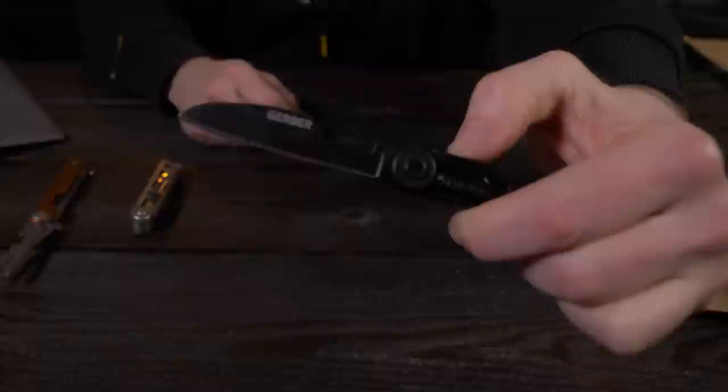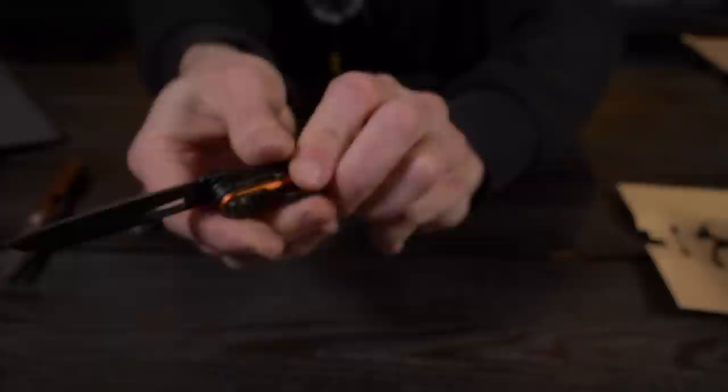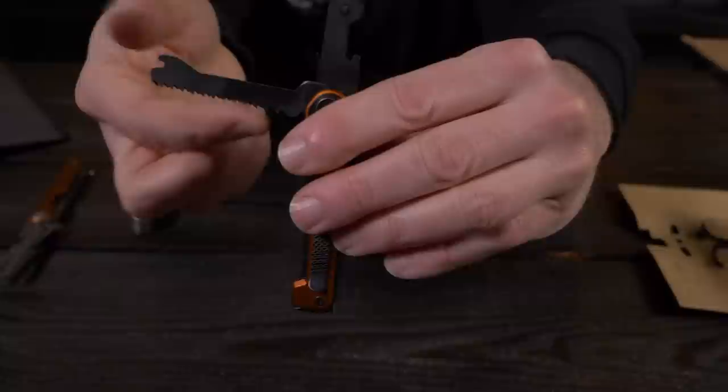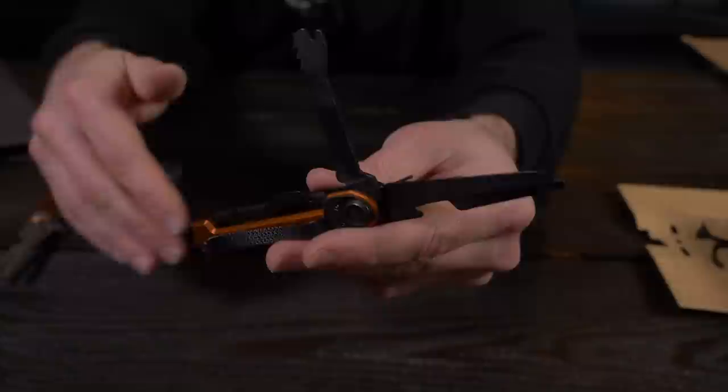Let's take a look at some of the other tools here on the Armbar Scout. So it has seven tools. There's your plain edge right there, it's kind of hard to see because it's all black. Just like all the other Armbar tools, that does have a frame lock which locks into place, so that is nice. And right here you have the saw, very sharp saw.